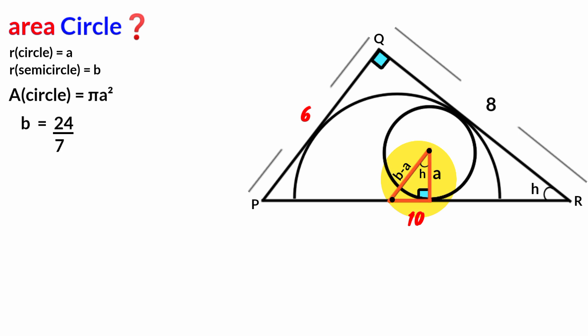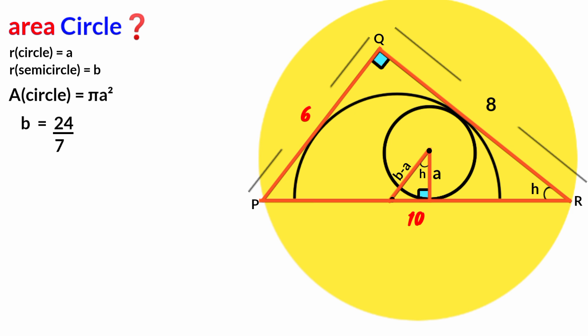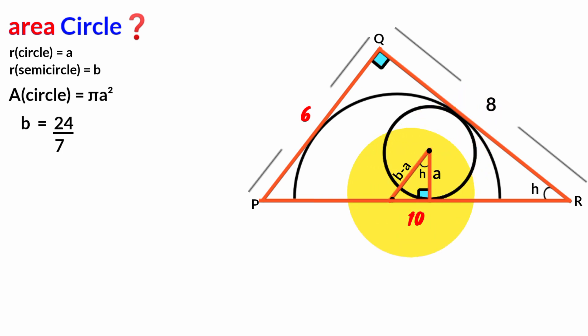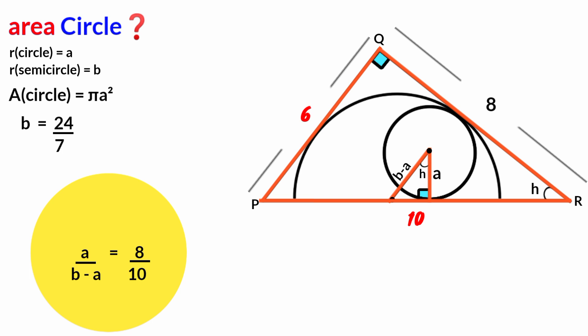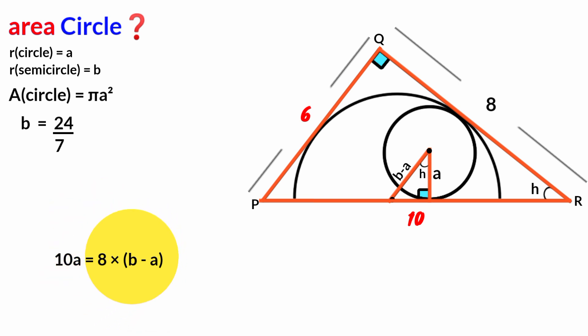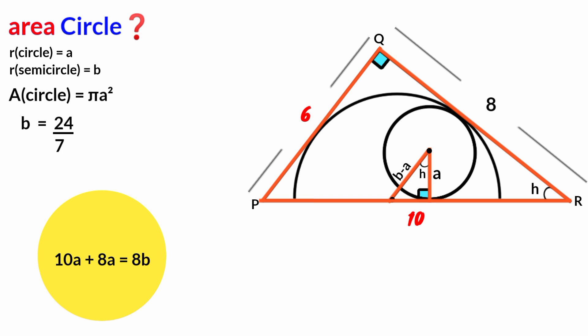This triangle is a right-angle triangle with angle H, matching the earlier triangle — they are similar. Taking the ratio of corresponding sides: A / (B − A) = 8 / 10. Cross-multiplying: 10A = 8(B − A) = 8B − 8A. Bringing the 8A to the left: 10A + 8A = 18A, so 18A = 8B.